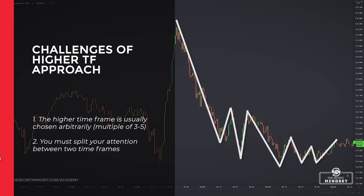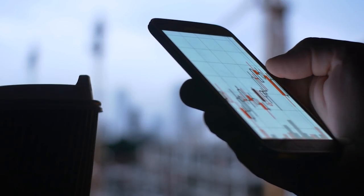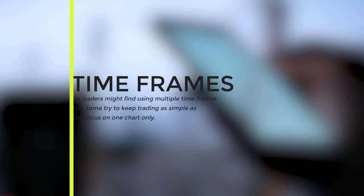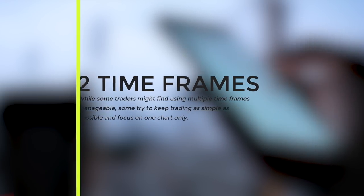if your trading timeframe is 1 minute, using a multiple of 5, you will use the 5-minute chart for determining the market bias. However, there is often no sound basis for the choice of the higher timeframe. Next, by using a higher timeframe, you must split your attention between two timeframes. While some traders might find that manageable, some try to keep trading as simple as possible and focus on one chart only.